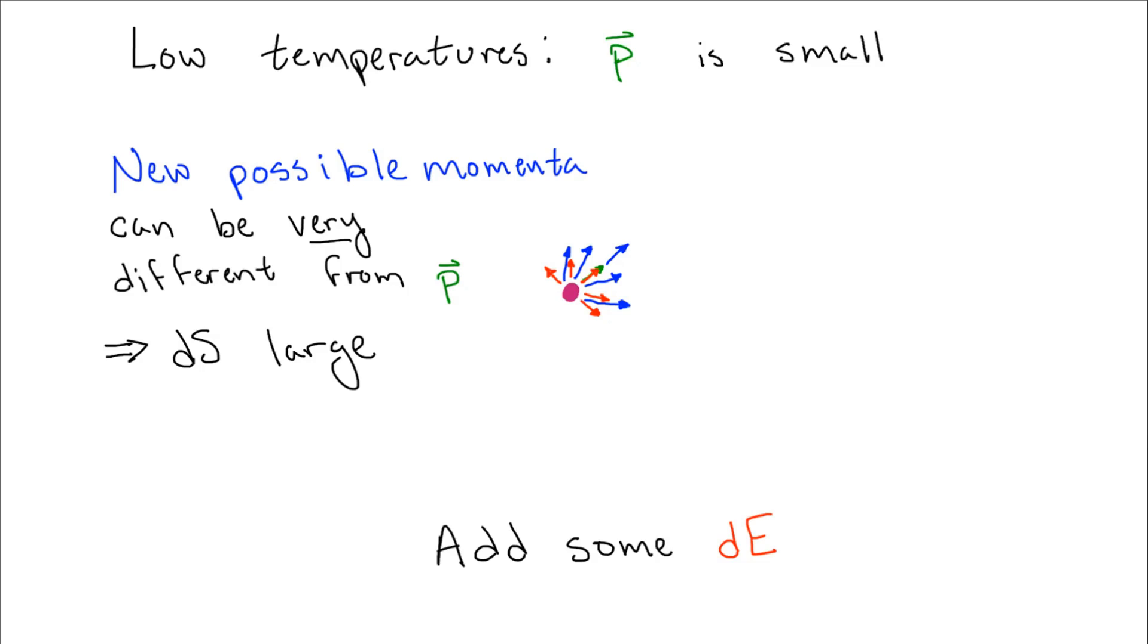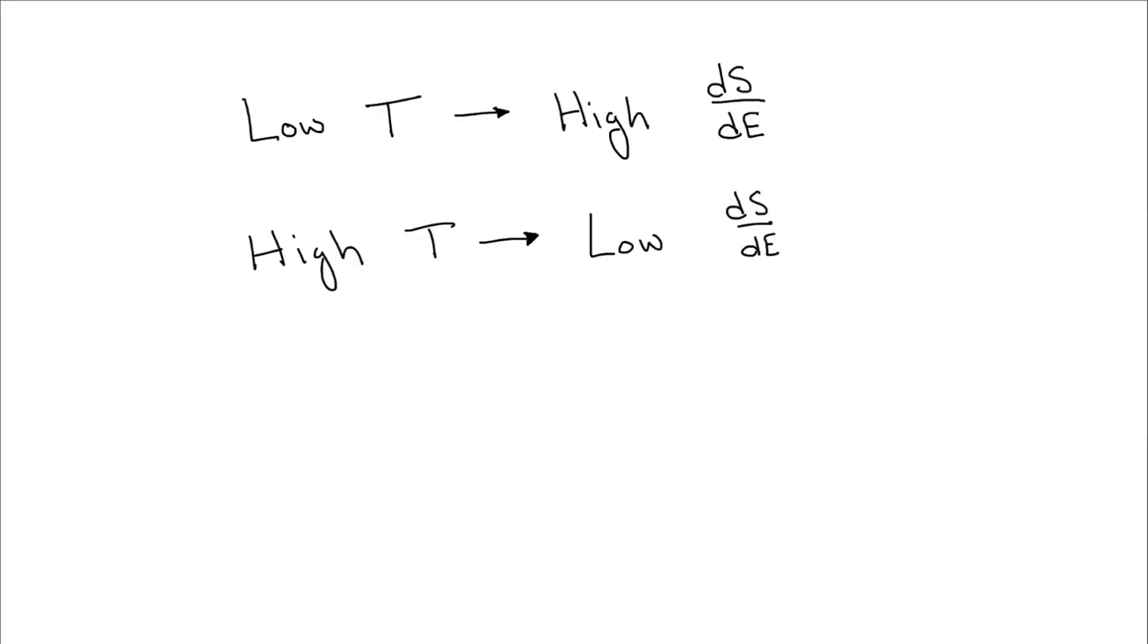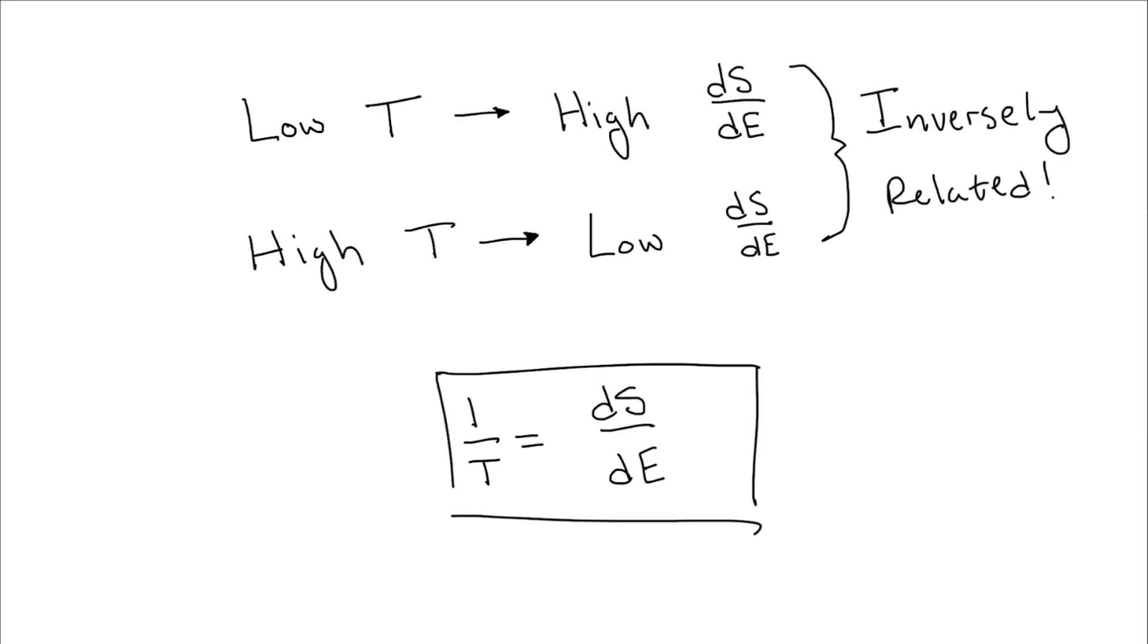From this little thought experiment, we can see that the change in entropy is inversely related to the temperature. This leads to the expression for temperature that 1 over the temperature is equal to the change in entropy over the change in energy. In other words, the inverse of the temperature is given by the slope of an energy versus entropy plot.